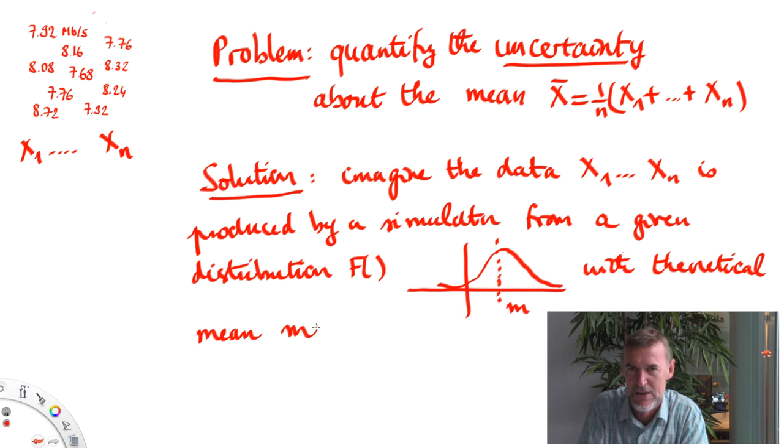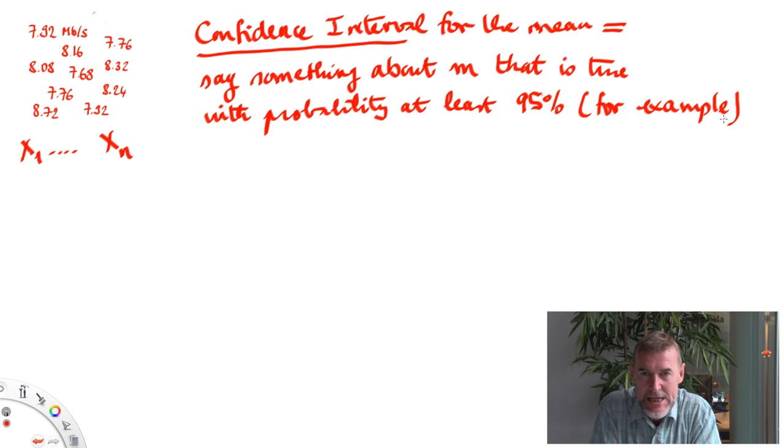Now obtaining a confidence interval for the mean means being able to say something about the mean that is true with a large probability, for example with 95% probability or with 99% probability. Indeed, in this statistical approach we will never be able to be 100% sure about the parameters of this hidden simulator.